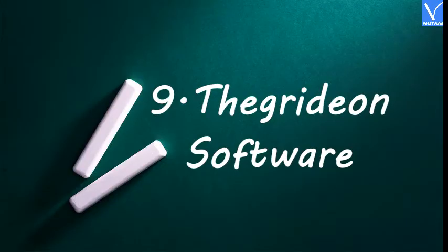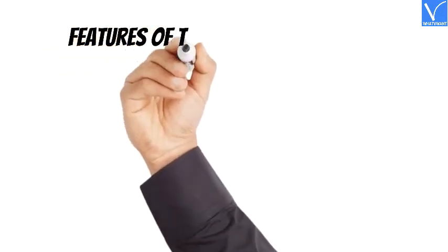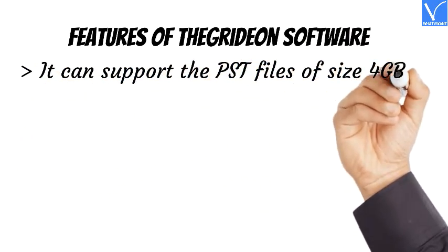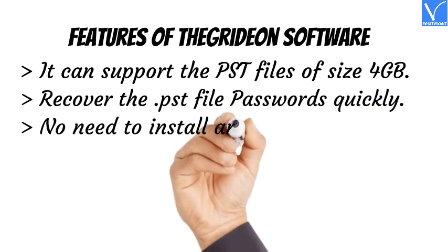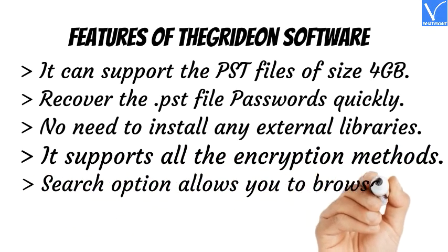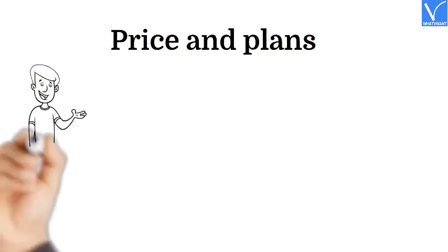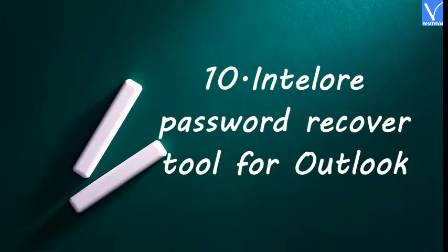Number 9: The Gridion Software. The Gridion Software is one of the advanced tools that can recover the lost password of MS Outlook. It has some special features compared to other recovery software. Features: Supports PST files of size up to 4GB. Recovers .pst file passwords quickly. No need to install any external libraries. Supports all encryption methods. Search option allows you to browse the required Outlook PST files easily. The price and plans of Gridion are exhibiting on the screen. The product link is provided in the description.